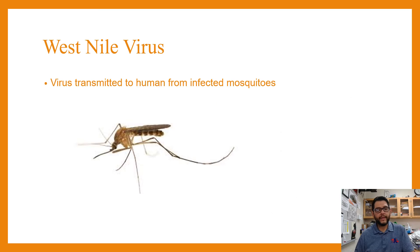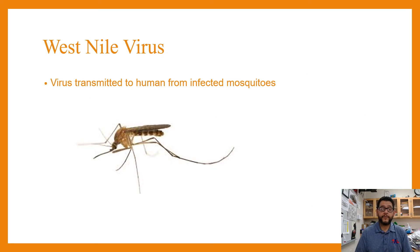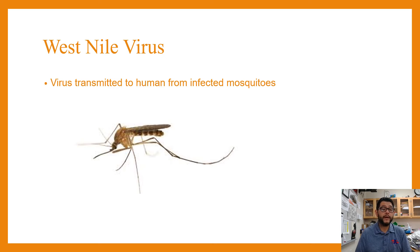Here's another one spread by mosquitoes, but this is a viral spread — the West Nile virus. It can be transmitted from infected mosquitoes. Originally this was found in Africa, in the west area of the Nile, but it has been spreading because of global climate change.